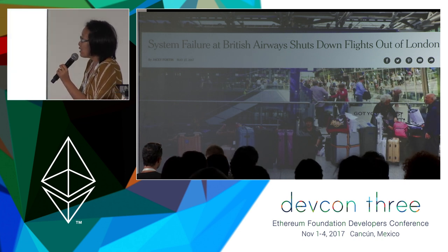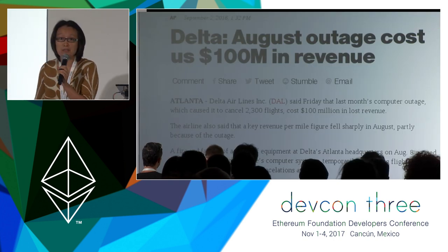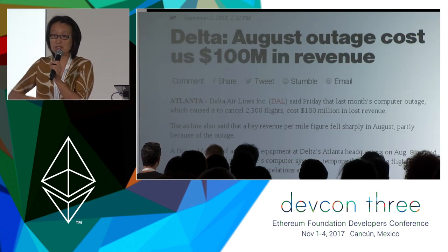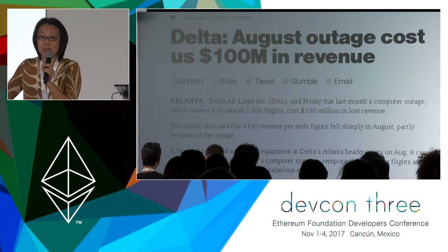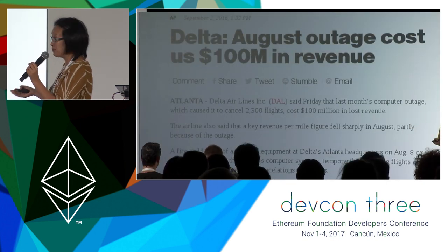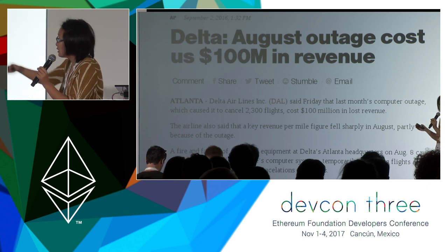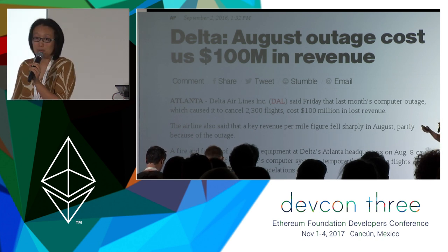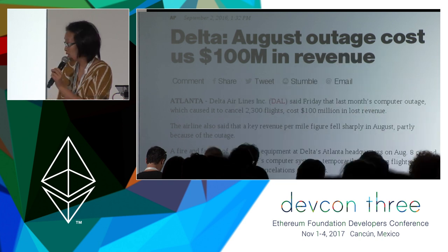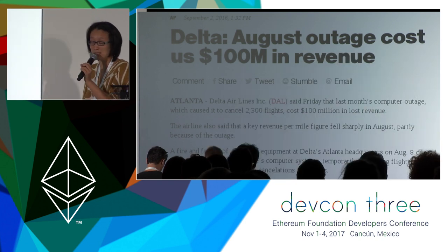Quite interestingly, in September last year something very similar happened to Delta Airlines. For that one day everything was shut down — you couldn't fly, you couldn't book any flights. Delta suffered a hundred million US dollars loss in revenue because of this systems failure.